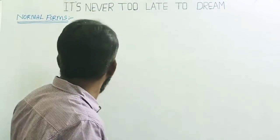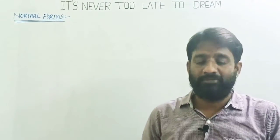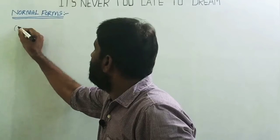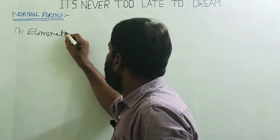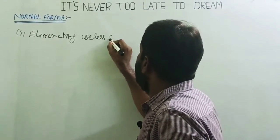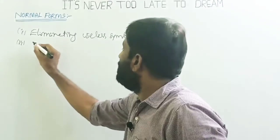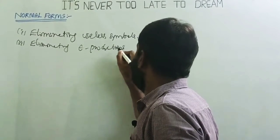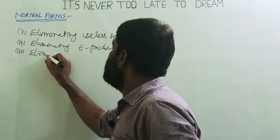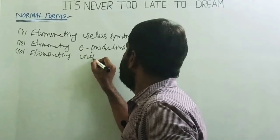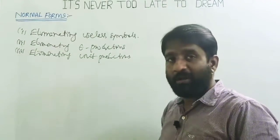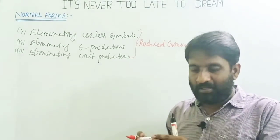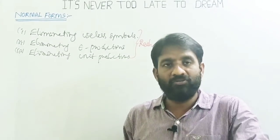Welcome back. Today's topic is normal forms. We already know how to convert a grammar into simplified or reduced form by: first eliminating useless symbols, second eliminating epsilon productions, and third eliminating unit productions. The grammar after applying these steps is called the reduced grammar. Compilers always expect the grammar to be in a standard, unified format.